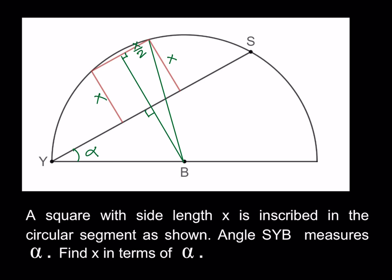How do we use alpha? We need to associate alpha with x, and for that we'll use the radius of the circle. I forgot to mention that this is a semicircle with radius one. If the radius were r, then r would also appear in the equation, but the radius is one.